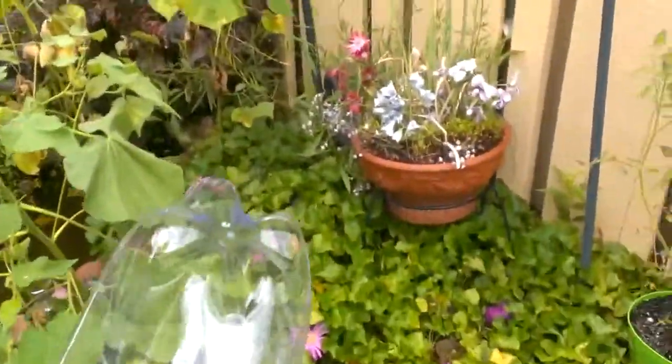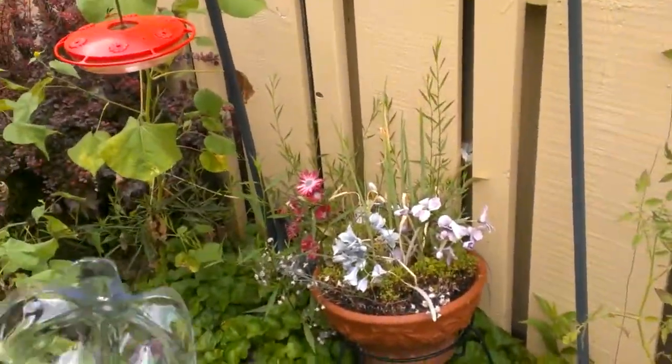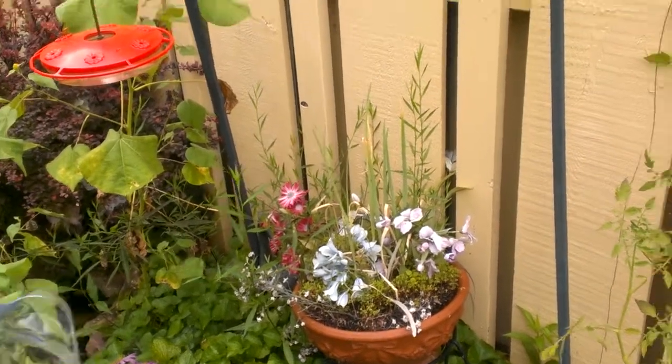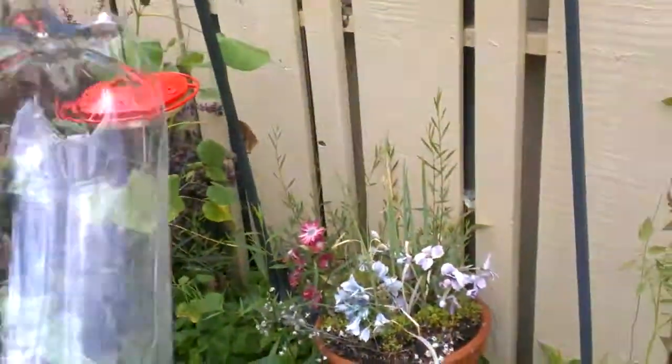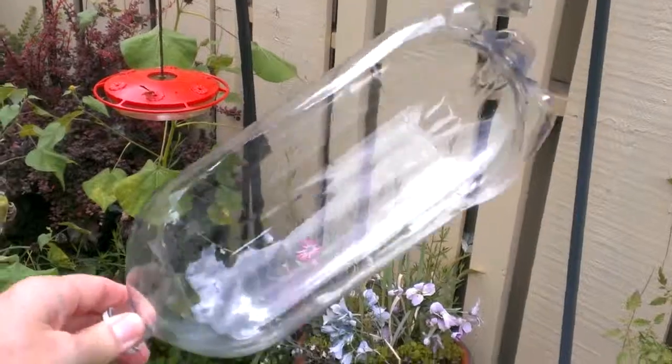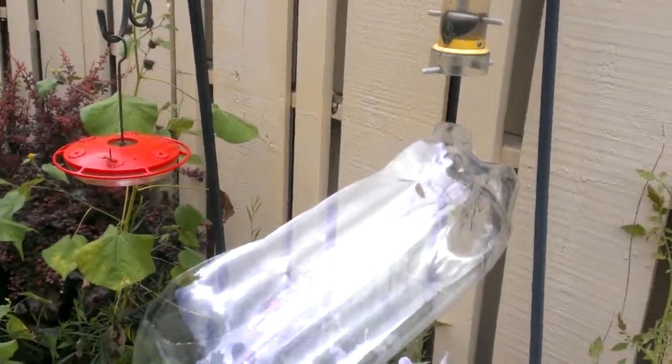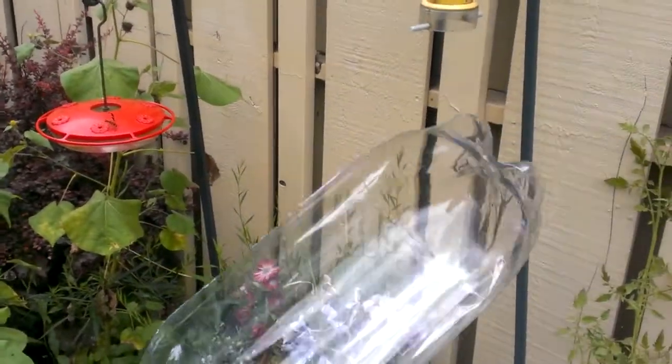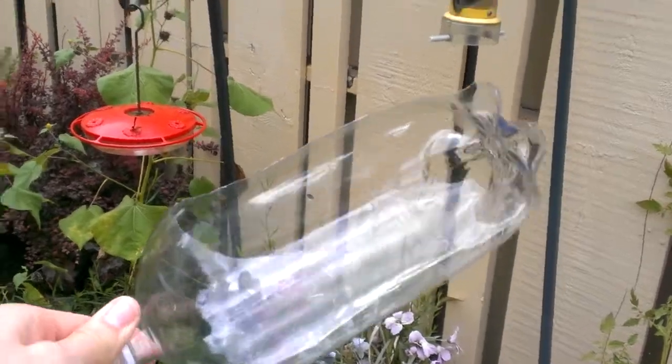Sometimes if you're working with batteries or something, you want to have a face shield. Here's a quick and easy way to make one. This is a two and a half liter bottle and you can see I just cut out one side of it.